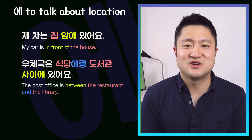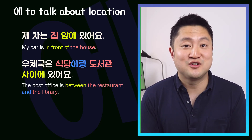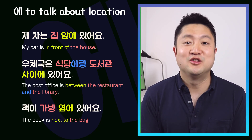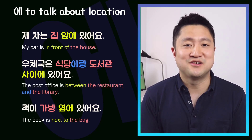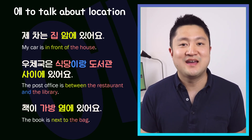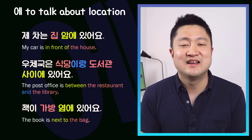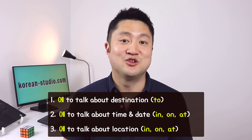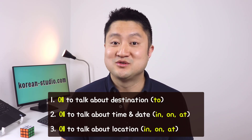Here are a few example sentences using these words. The book is next to the bag: 책이 가방 옆에 있어요. In these sentences we use words like 앞에, 사이에, and 옆에 to specify where something is. Unlike the particle 에 alone, these words are separated from the nouns they are used with. So today we learned three different uses of the particle 에: to talk about the destination of a verb, to talk about time and date, and to talk about the location of something. That's it for today — bye bye!